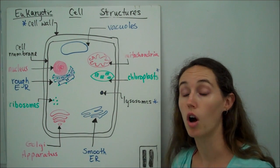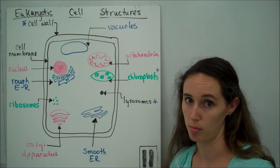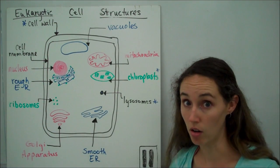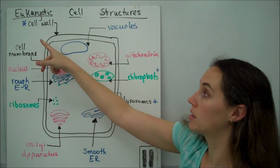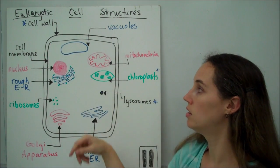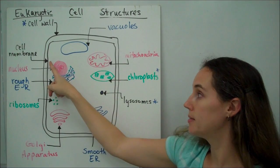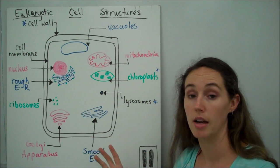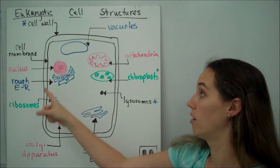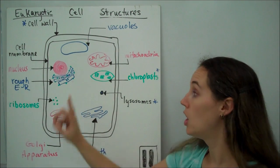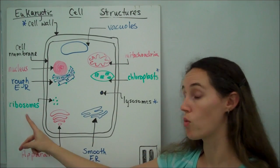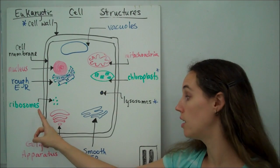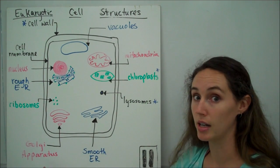Eukaryotic cells are much larger and much more complex. So, they also, many but not all, eukaryotic cells, I'm sorry, have a cell wall. All have a cell membrane. Some of the new structures that eukaryotic cells have that prokaryotes don't are a nucleus, rough endoplasmic reticulum, ribosomes, we've seen those in prokaryotes, so we have a little commonality there, Golgi apparatus,